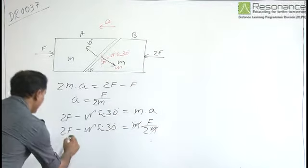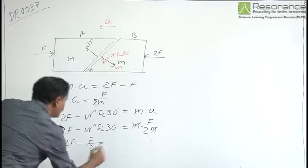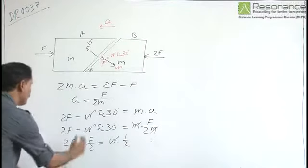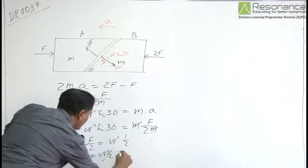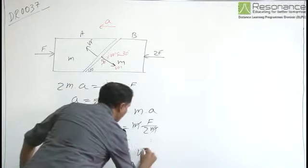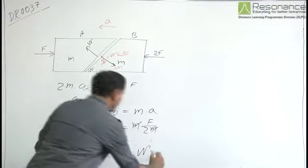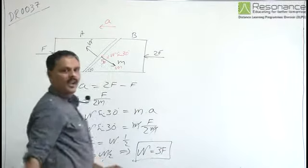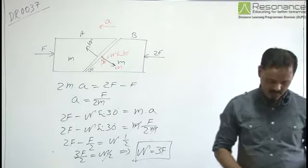So here from I have 2F minus F by 2 is equal to N into half. Or here from we have 3F by 2 is equal to N by 2, or normal reaction exerted by one block on the other is equal to 3F. So the magnitude of normal reaction is 3F and the correct answer is D.